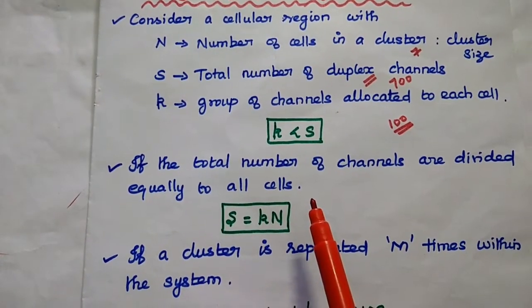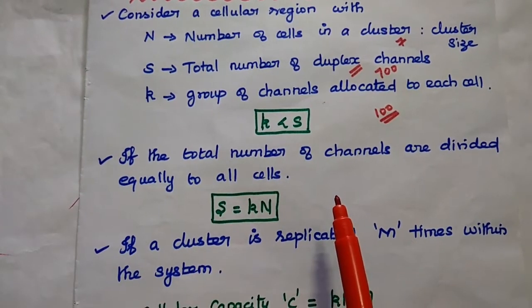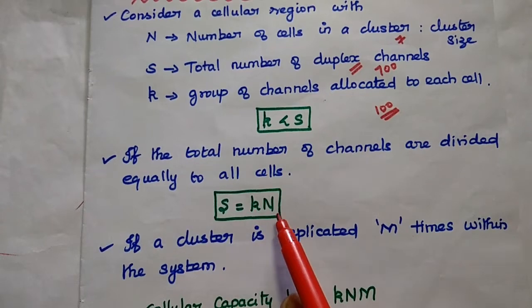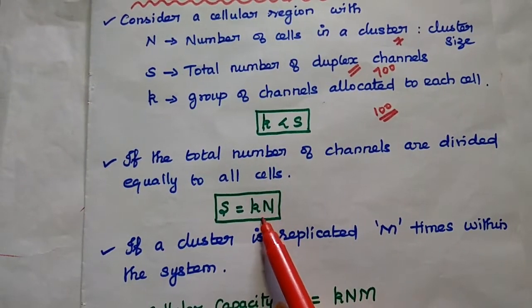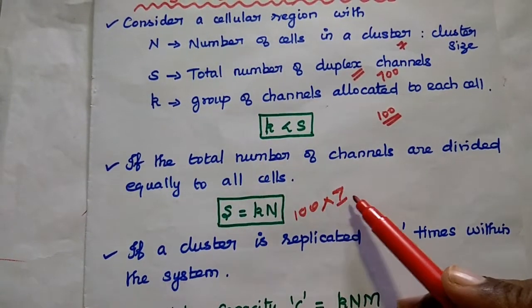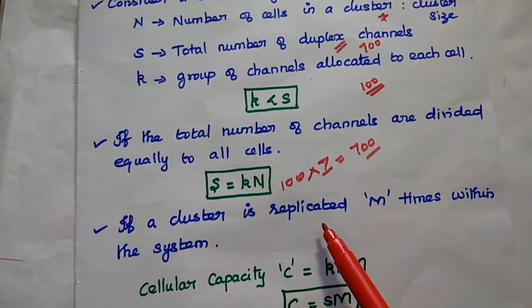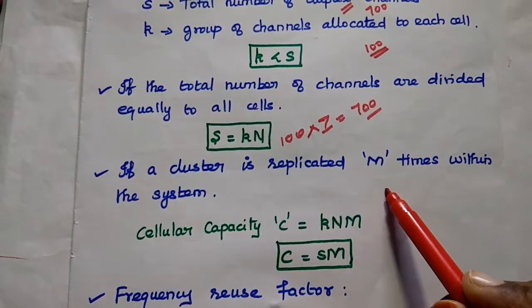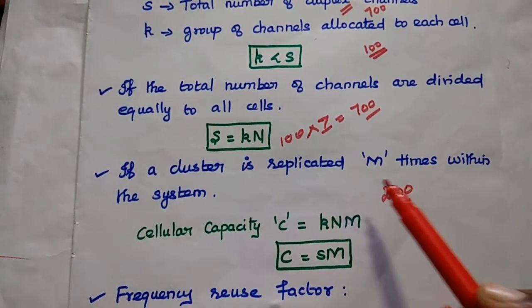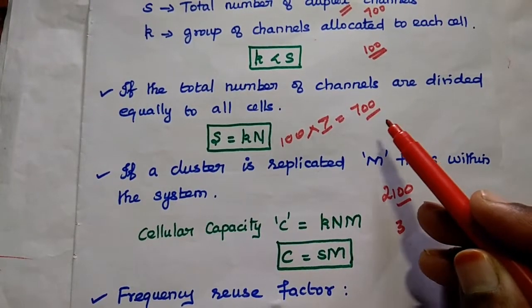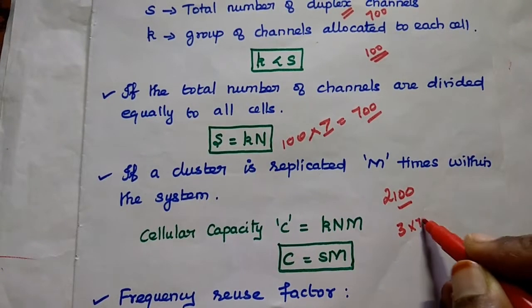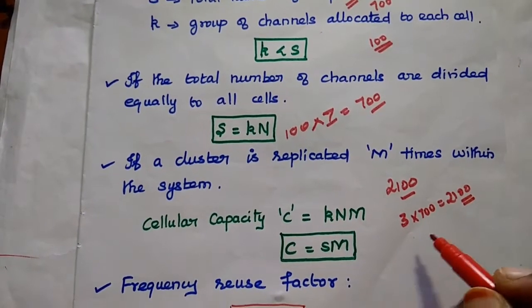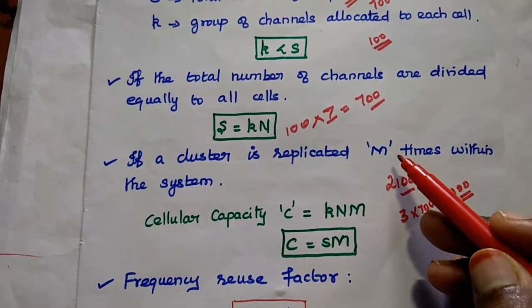We divide the total number of channels equally to all cells. Then the total number of duplex channels equals K times N. Here N is the number of cells (7) and K is the group of channels (100), so 100 times 7 gives us 700 total channels. If we want to increase the capacity, we can replicate the cluster M times. To support 2,100 users, we can replicate the cluster 3 times — each cluster supports 700 channels, so 3 times 700 gives 2,100 subscribers. If we want to increase capacity further, we increase the M value.